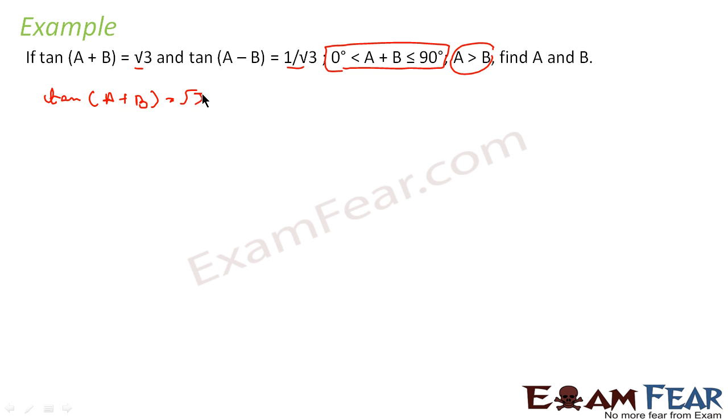So instead of √3, if we can write something in the value of tan here, I can cancel tan tan. So I will get A + B equals something. Similarly, tan(A - B) = 1/√3. I will write this in terms of tan.